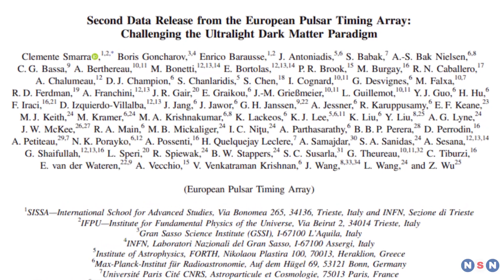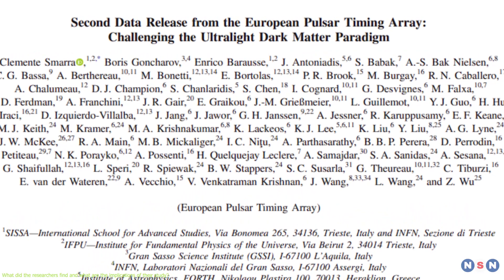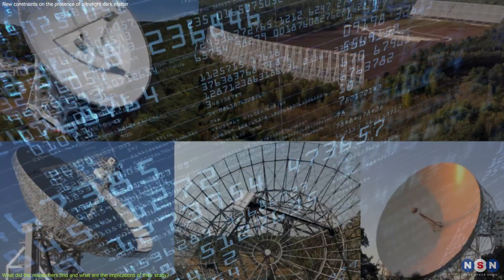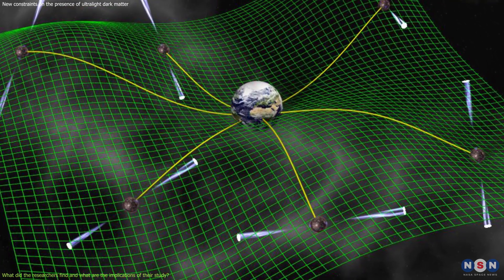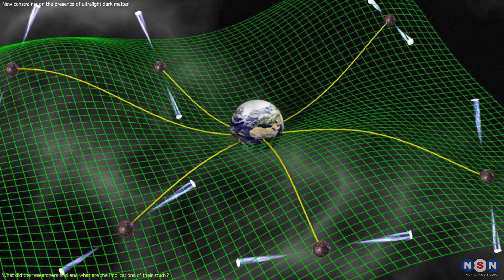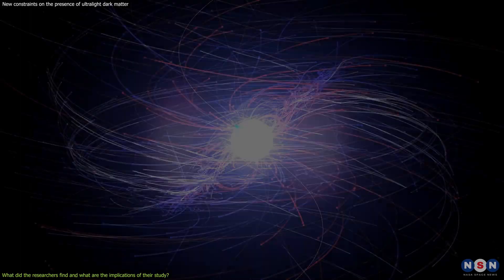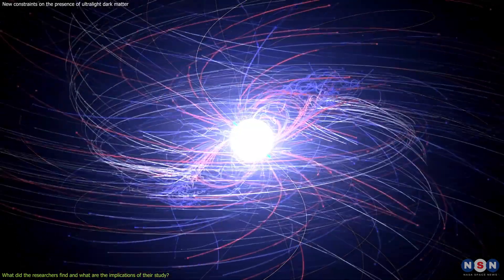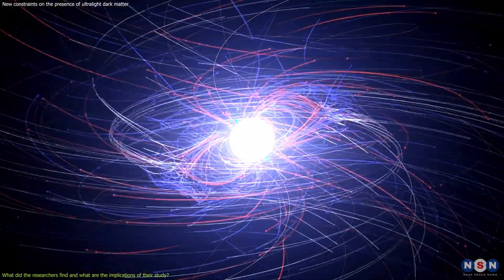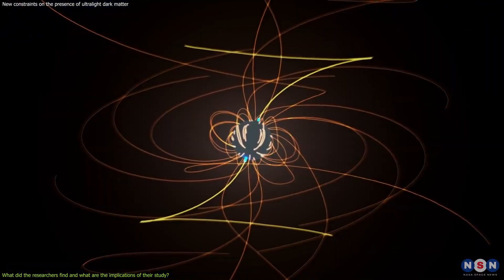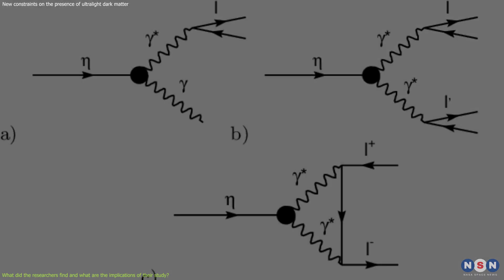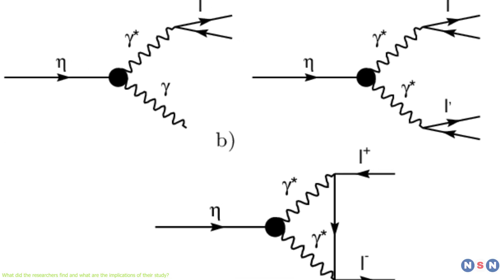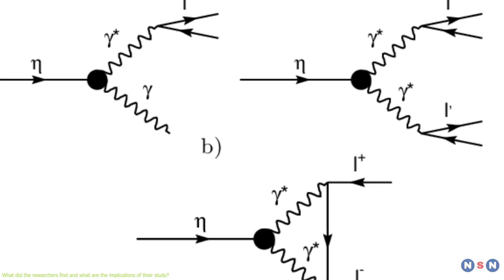Now let's see what the researchers found and what the implications of their study are. The researchers found that the European Pulsar Timing Array data does not show any evidence of the Shapiro time delay caused by ultralight dark matter, and that they can exclude a range of possible masses and densities for the axion-like particles. They also set a new upper bound on the probability that axion-like particles are produced by the eta-meson decay, which is a rare and poorly understood process.